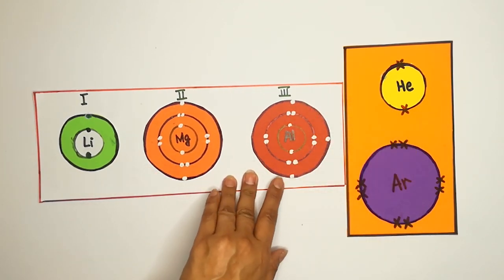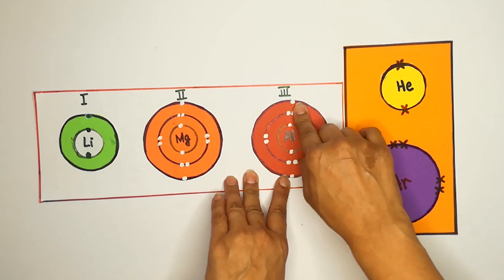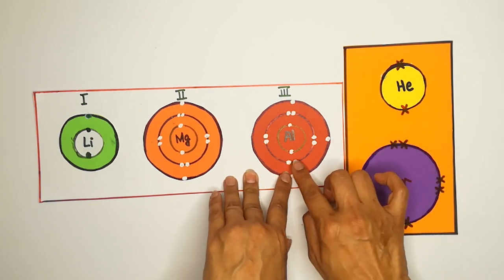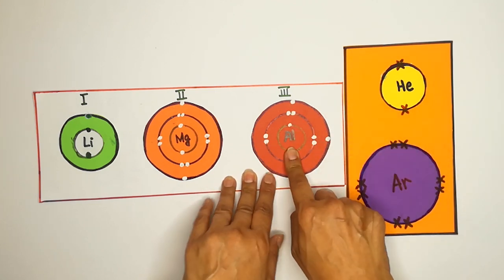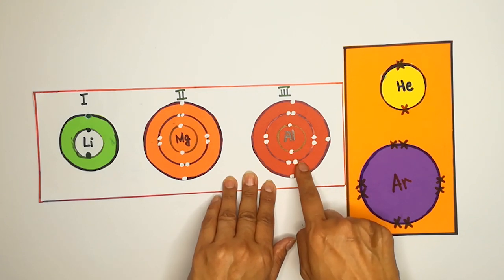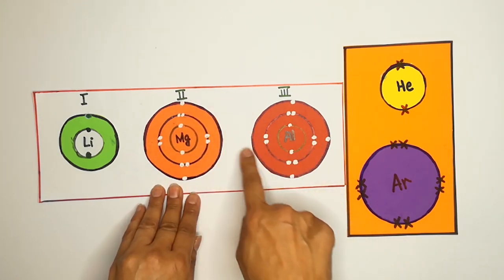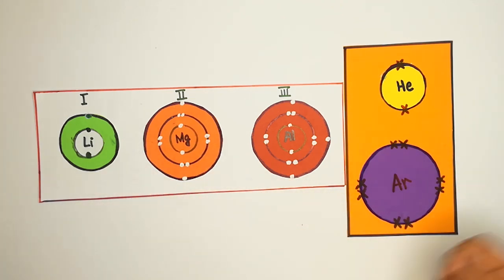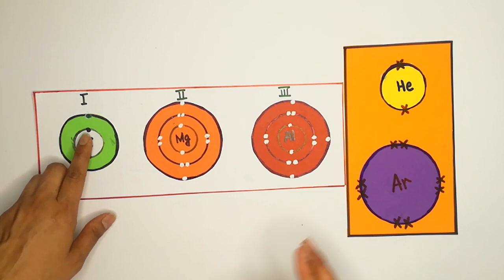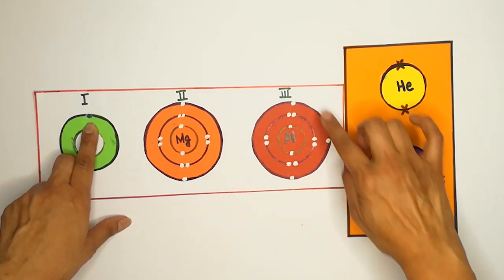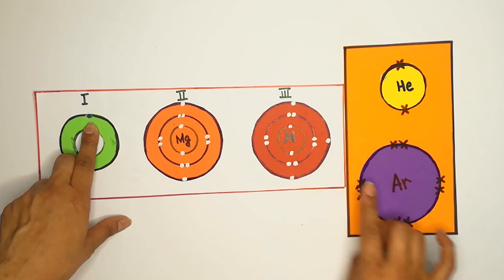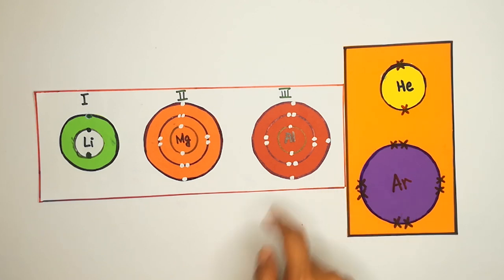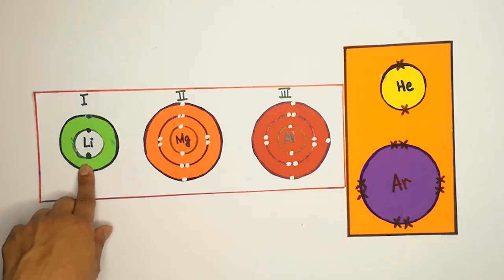Third group ke elements ke paas teen valence electrons hote hain. Jab teenon electrons bahar nikalenge, toh pichle wale shell mein 1, 2, 3, 4, 5, 6, 7, 8 — eight electrons poore ho jaenge. Yani by giving its electrons to another element, iski outermost shell mein 8 electrons rahenge — it means it will attain 8 electrons and follow the octet rule, jabke lithium follows the duplet rule.